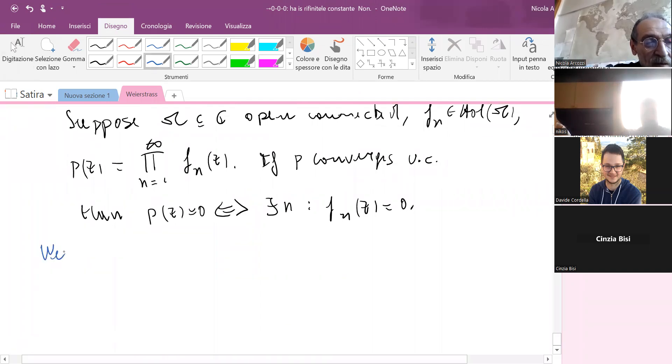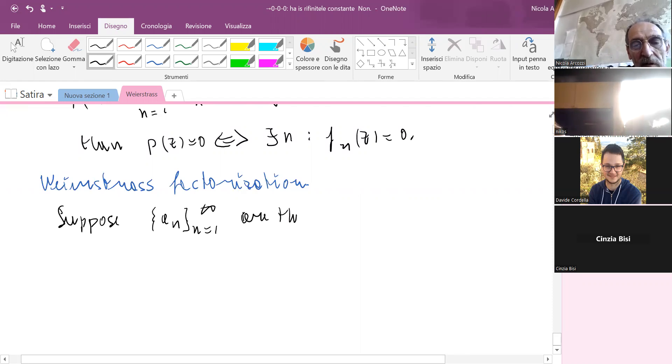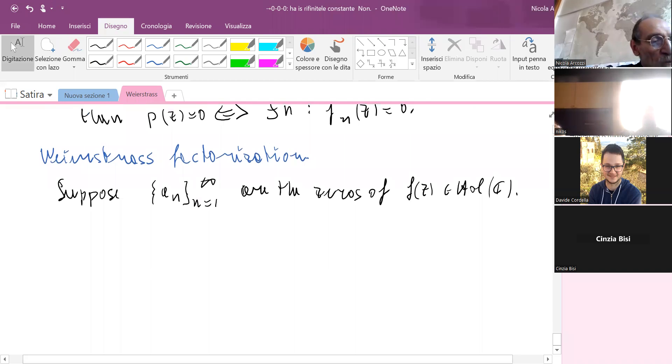So here we have the Weierstrass factorization. What is the problem? Suppose that an are the zeros of f, a holomorphic function, an entire function.